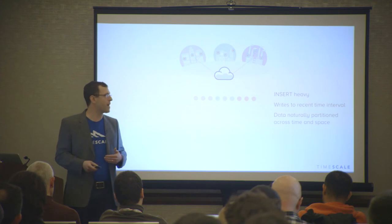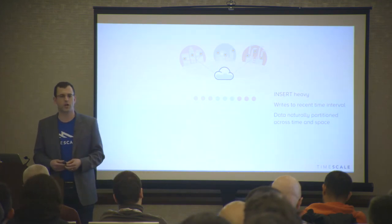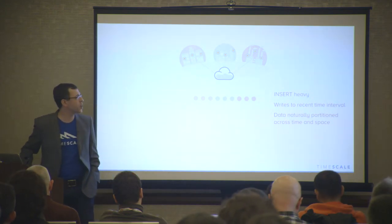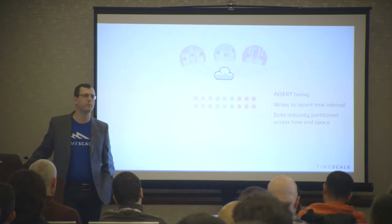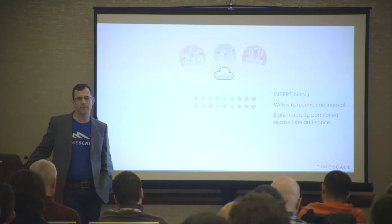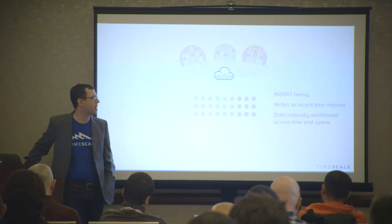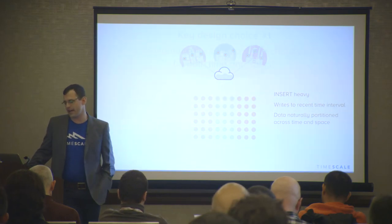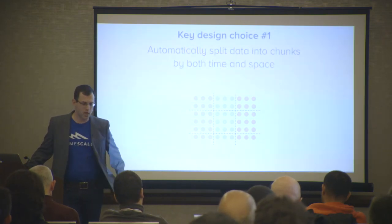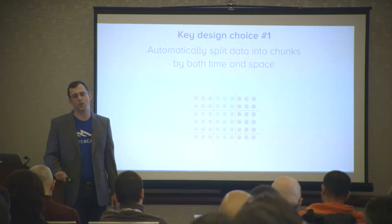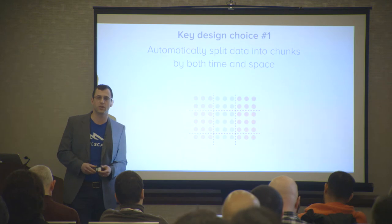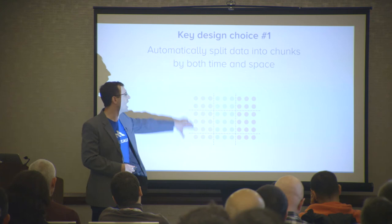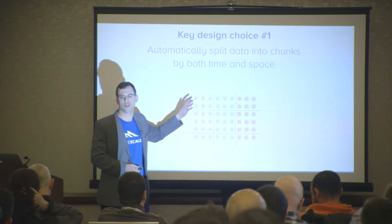Looking back at how this informs our architecture — we start to see the design of TimescaleDB. At its core, we designed with a type of multidimensional partitioning — specifically two-dimensional partitioning: one against the time dimension, and one against some type of spatial or primary key dimension. This gives you a natural partitioning across time and space as data streams in from many sensors.